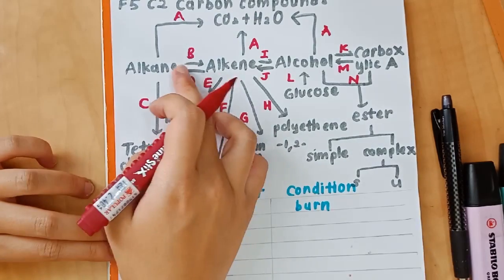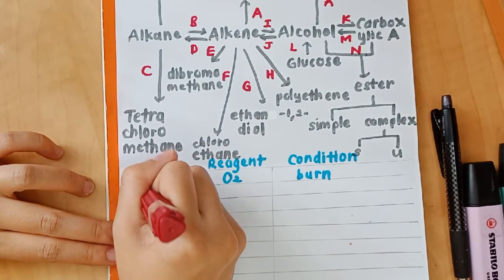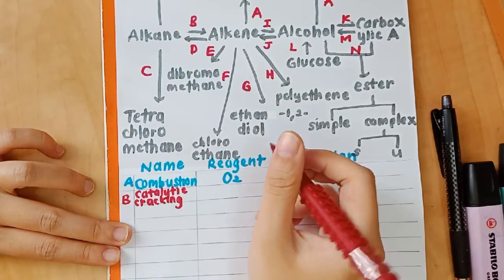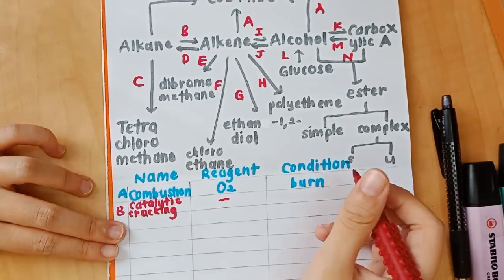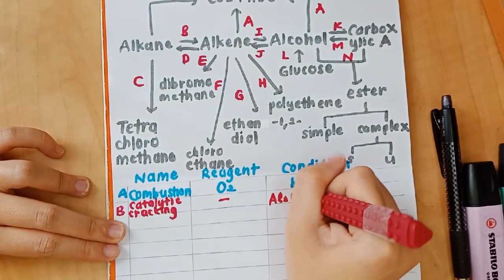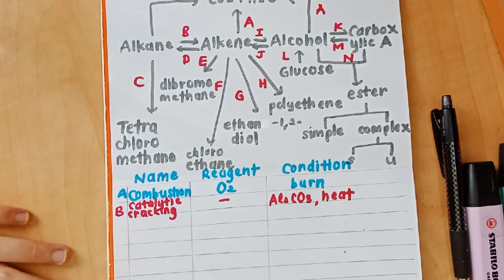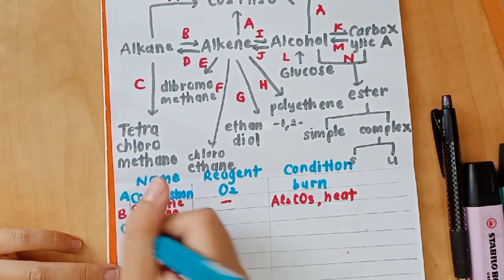And then I used a different color for B, just to differentiate. B denotes the reaction from alkane to alkene. And the name of the reaction is catalytic cracking. No reagent is needed. The conditions are rather important. And they are Al2O3 and heat.